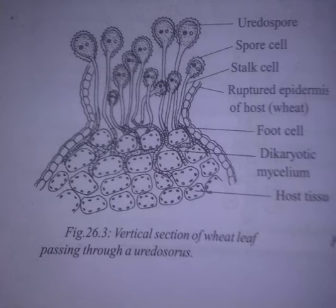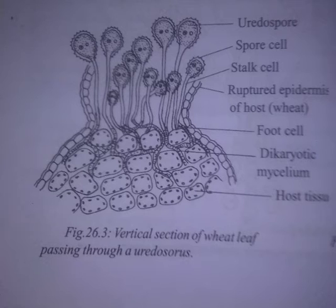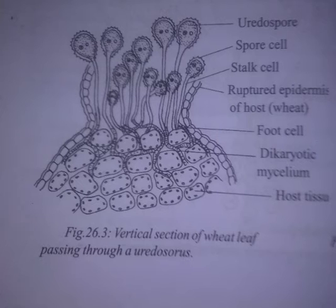In the early summer stage, reddish brown pustules or sori appear on the upper surface of the leaf. Each pustule is called a uredosorus, consisting of uredospores, paraphyses, and spore cells, lung cells, and foot cells. On the spore, reddish brown pustules develop.